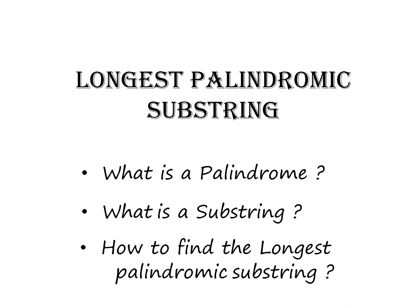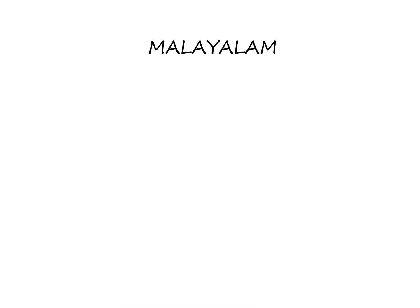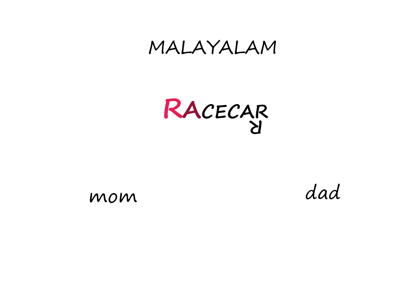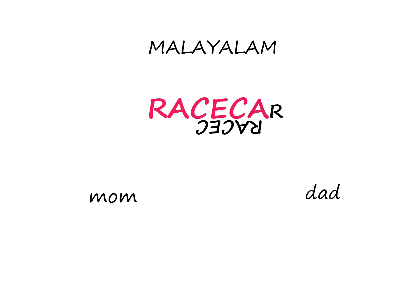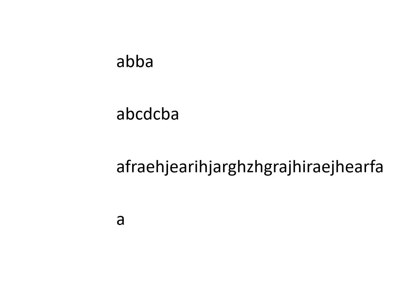First, we will see what is a palindrome. Malayalam is the most common example from our childhood for a palindrome. Dad and mom are some too. Palindromes are sequences of characters that read the same from backward as forward. It doesn't mean that the palindrome must have a meaning — it can be of various lengths, big or small.